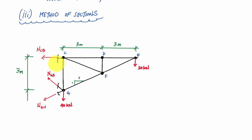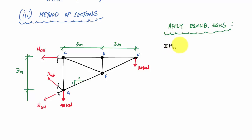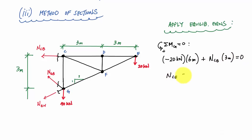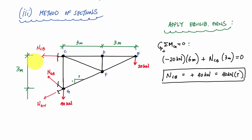The first thing I'll do is use sum of moments, which is very useful here. I can see that both NGB and NGH go through point G, so if I sum moments about G, I can get NCB directly. Even better, the 40 kilonewton load also goes through point G. Applying sum of moments about G equal to zero, counterclockwise positive: negative 20 kilonewtons times 6 meters plus NCB times 3 meters equals zero. That gives NCB equal to positive 40 kilonewtons — tension.